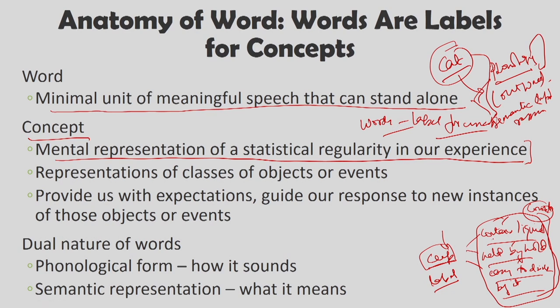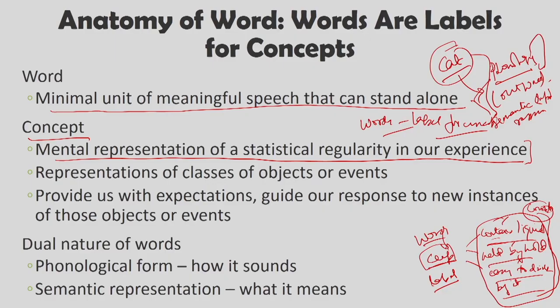The properties of a concept and the label for it — that is what words are. The concept here is 'cup,' which falls under a higher node of 'drinking vessel.' So 'cup' is the label or word for the concept being defined, and the properties describe what it is. Concepts are representations of classes of objects or events. For example, 'cheese' is a class of object, and 'roll' is an event. Concepts provide us with expectations that guide our responses to newer instances of those objects and events.